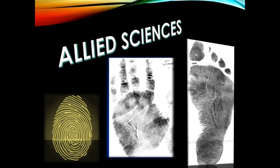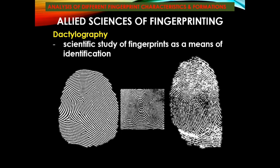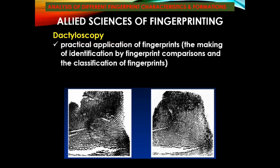Before we start with the interpretations and analysis of the pattern formations, we are going to discuss the allied sciences. When we talk about allied sciences, these are studies which are connected or related with fingerprinting. First, we have dactylography, which is the scientific study of fingerprints as a means of identification. Next is dactyloscopy, which is the practical application of fingerprints involving personal identification through fingerprint comparison and classification.